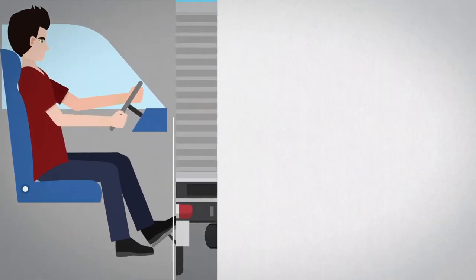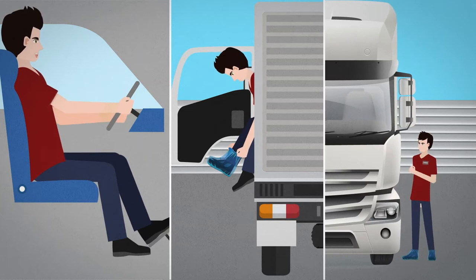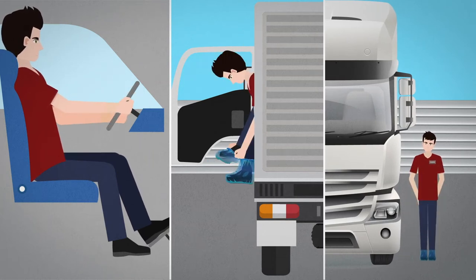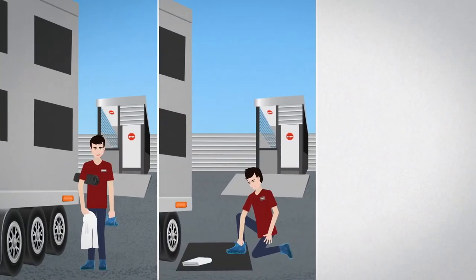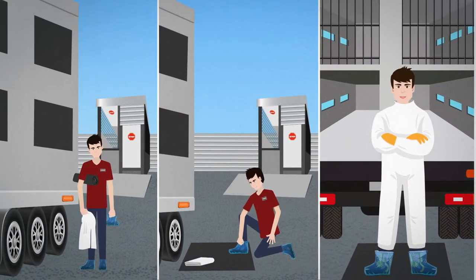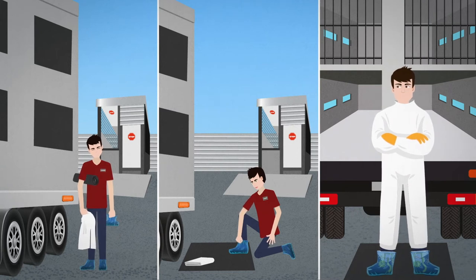Drivers are required to wear shoe covers when exiting the truck cab at a PIC production unit. Clean rubber overshoes, or multiple layers of disposable shoe covers, with clean cloth or disposable coveralls, must be worn in the cargo area when loading or unloading pigs.